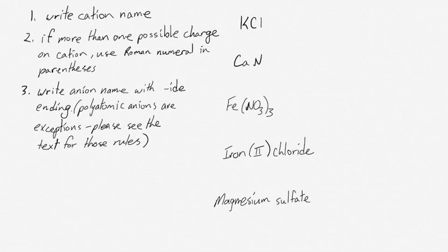Naming ionic compounds follows a simple set of rules. The first rule is just write the cation name down. Typically this means just the metal name.